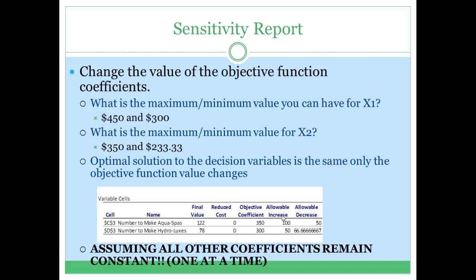To find the optimal objective function value in this scenario, we know the solution is 122 and 178. We plug in those values and that gives us our new objective function value.